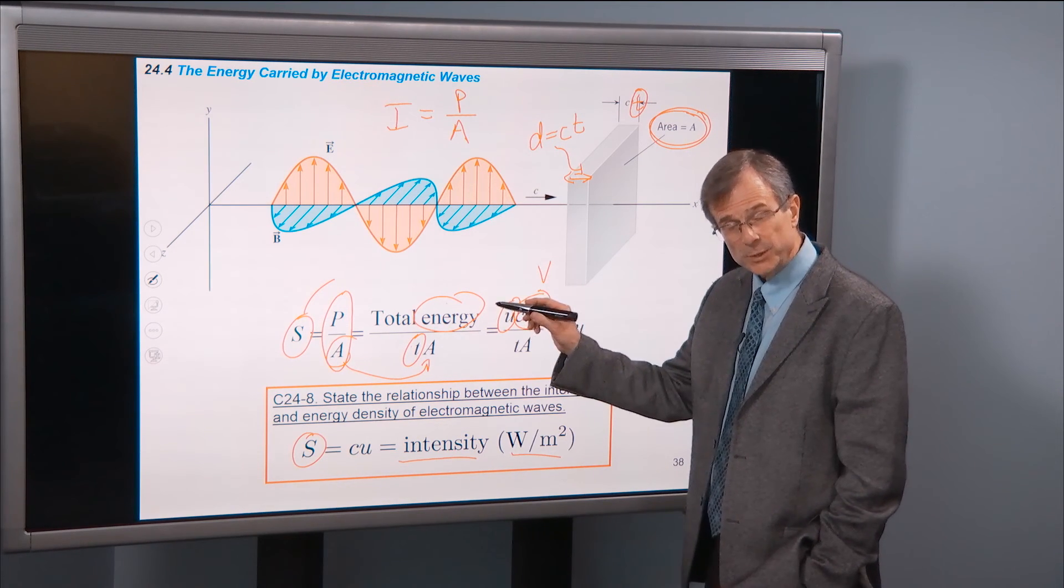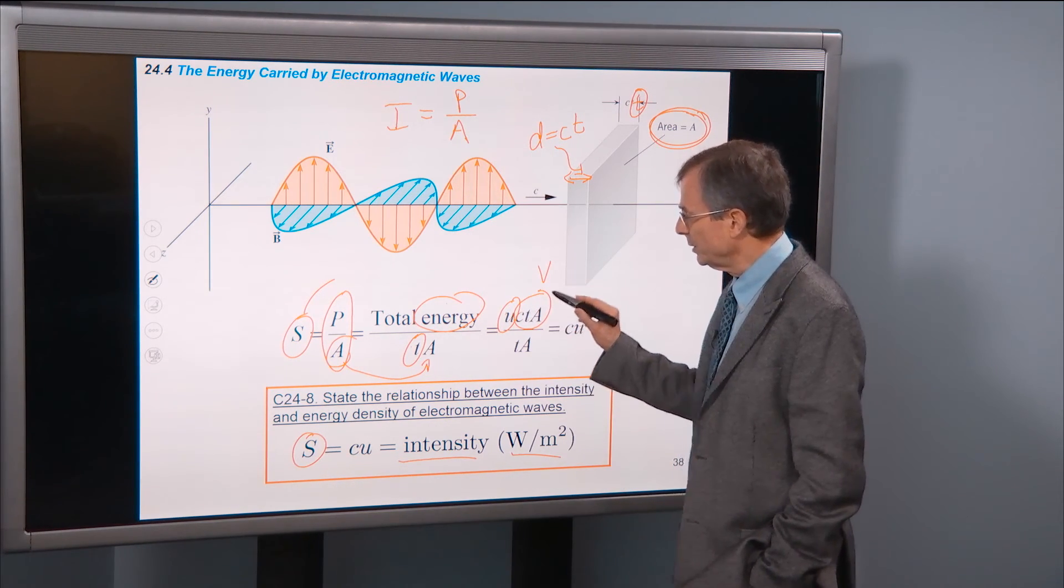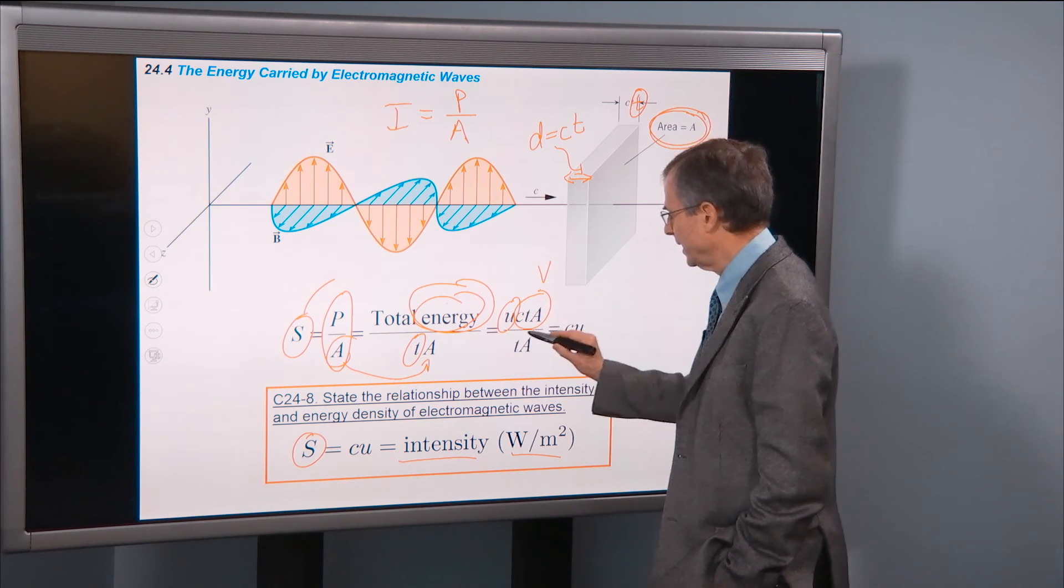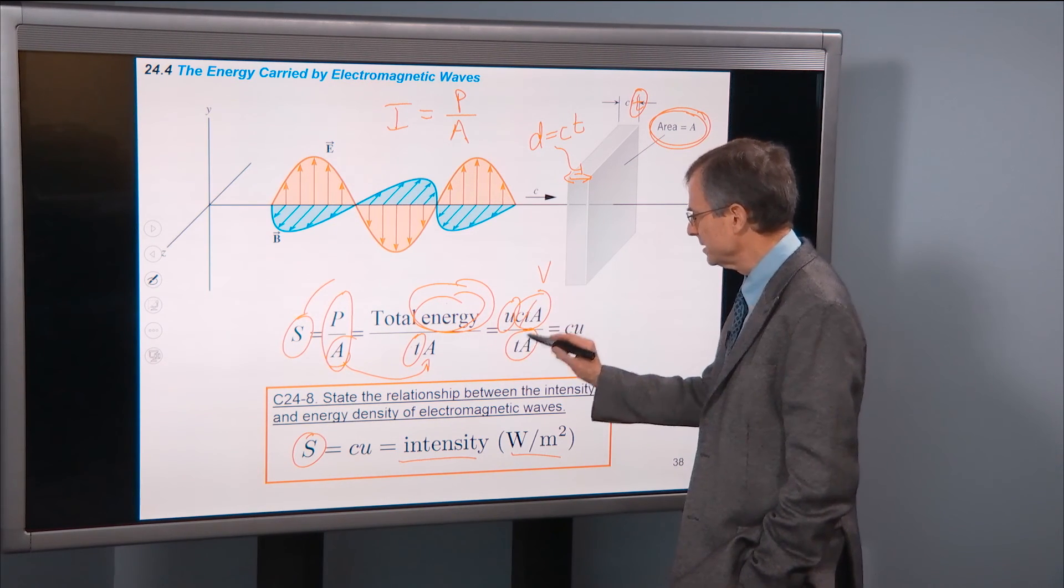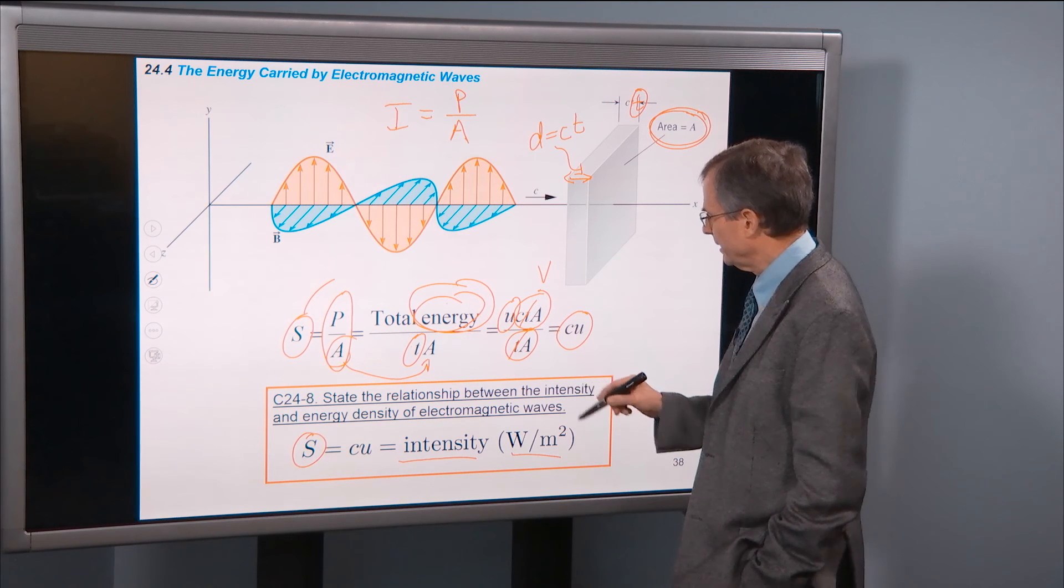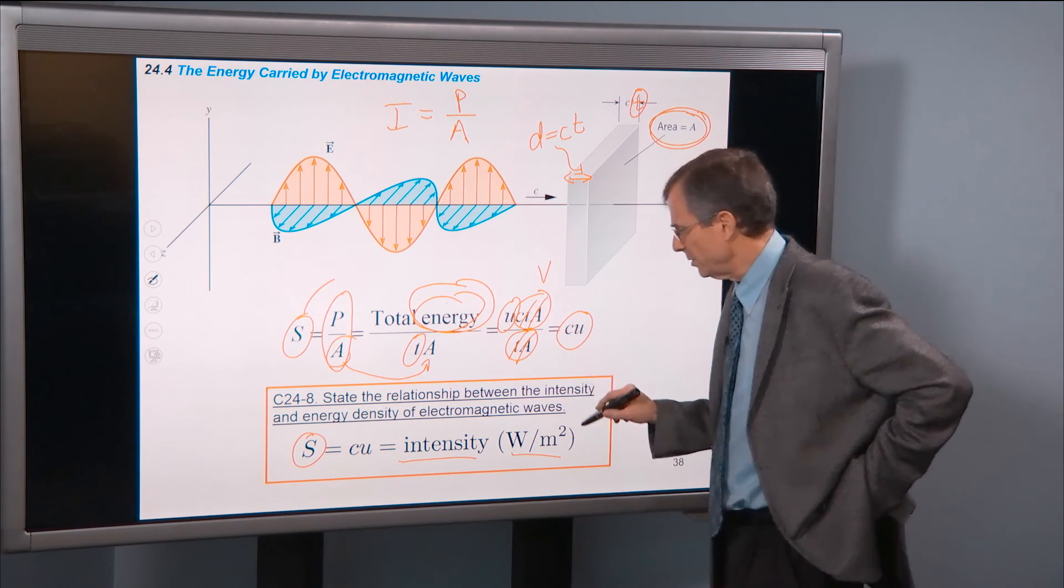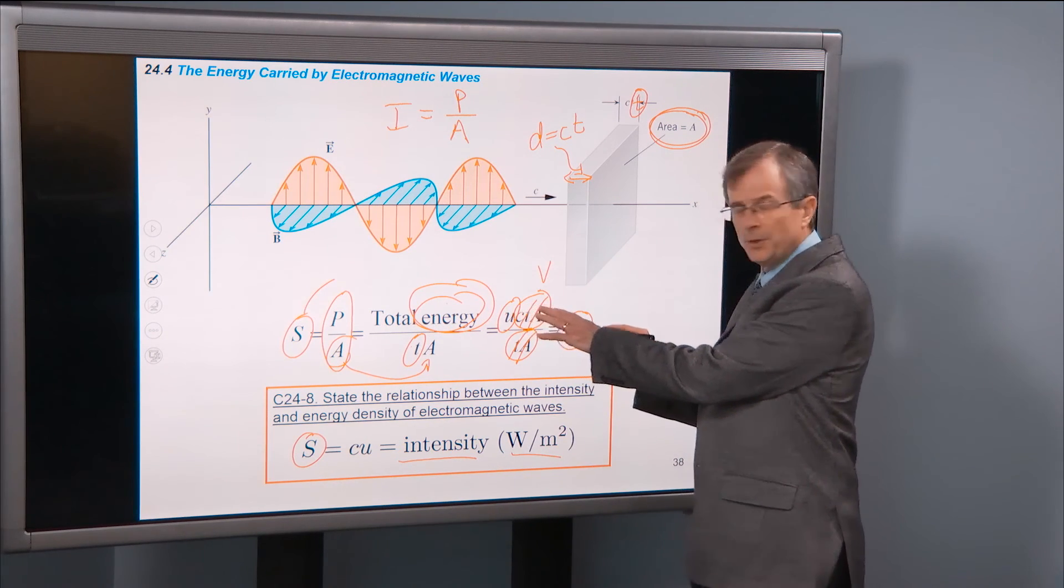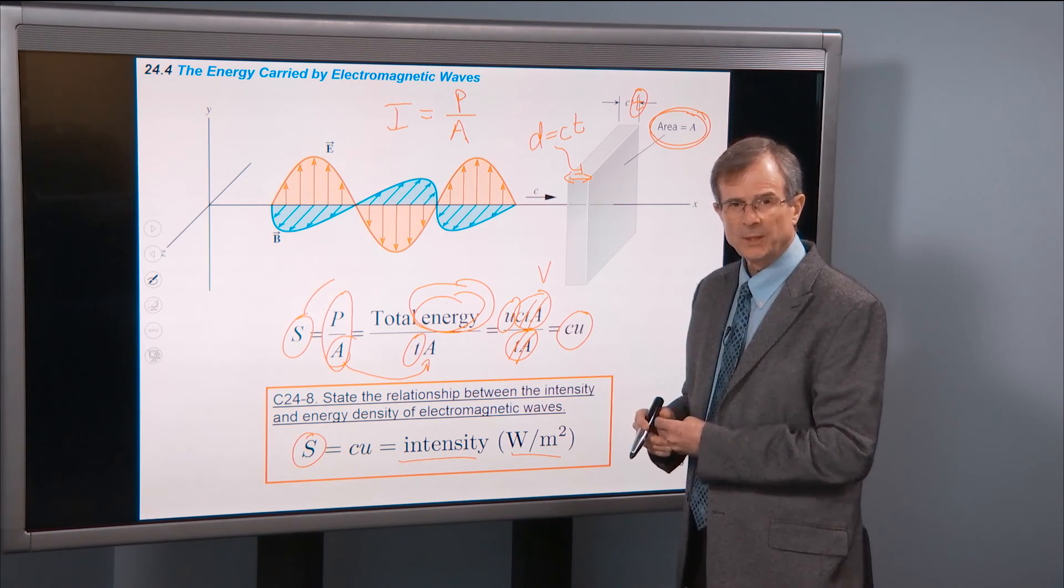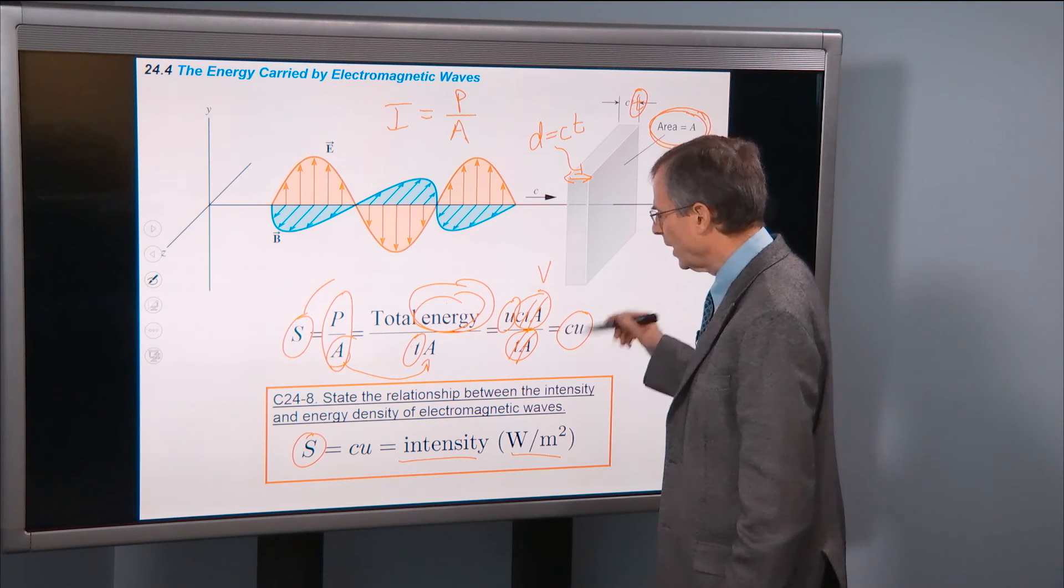Energy, u is energy per unit volume, times the volume will give you this total energy, and then t comes along for the ride. The t's cancel, and we get the a's cancel, and we get just c times u. So I'm not expecting you to know this derivation, but I wanted to do it quickly. It only took us a couple of minutes to see where it all comes from.